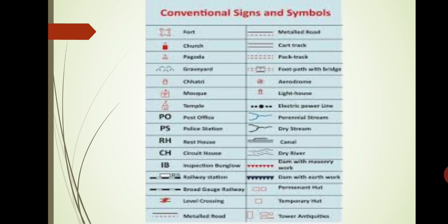Signs are used to show various things on a map as per convention. Symbols are miniature drawings of the respective objects. Miniature in sense, small. For example, temples, mosques, forts, etc. are shown using conventional symbols.